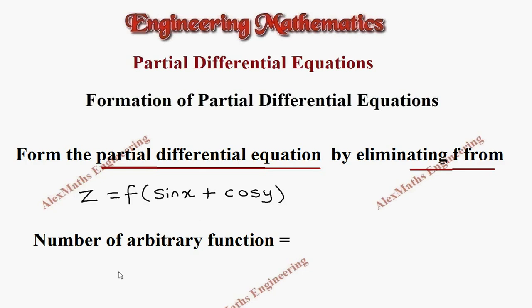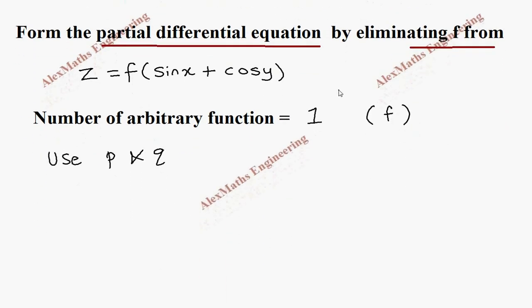Here we find the number of arbitrary functions equal to 1, and that is f. So we are going to use only p and q to eliminate the arbitrary function. Let's take this as the first expression, and we are going to find its derivative.